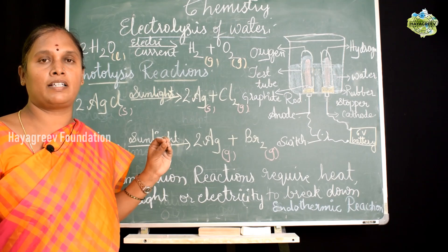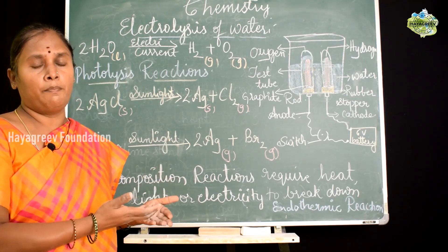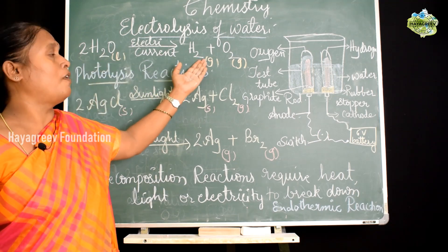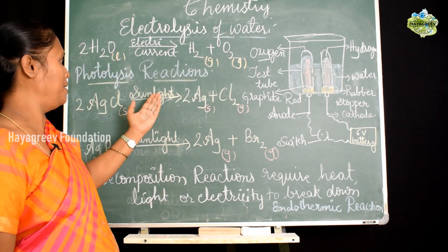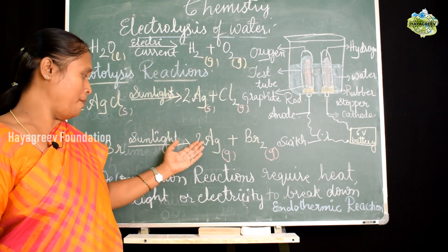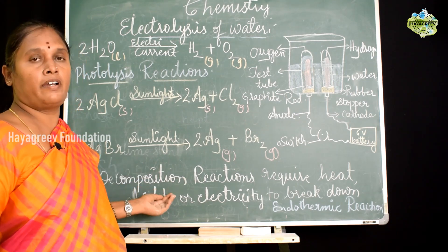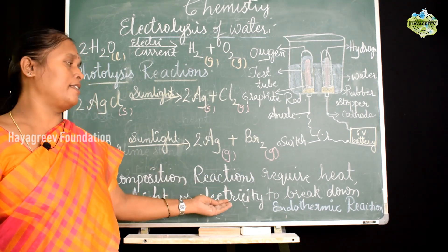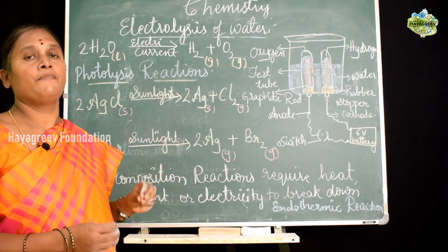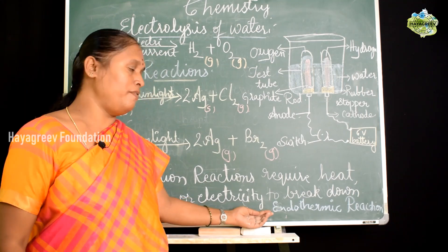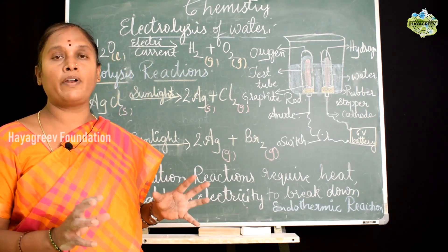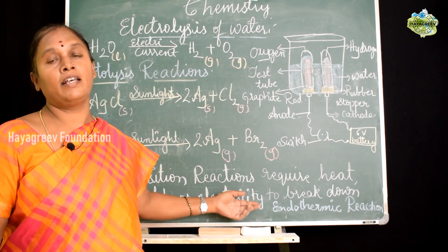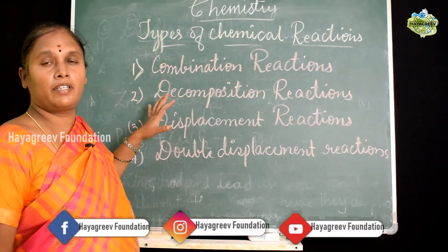In summary, decomposition reactions were illustrated by: calcium carbonate heated to form calcium oxide with gases liberated; water decomposed by electricity to form hydrogen and oxygen; and silver chloride and silver bromide decomposed in the presence of light. The overall learning is that decomposition reactions require heat, light, or electricity — some form of energy is consumed. Therefore they are termed endothermic reactions, whereas exothermic reactions liberate heat.